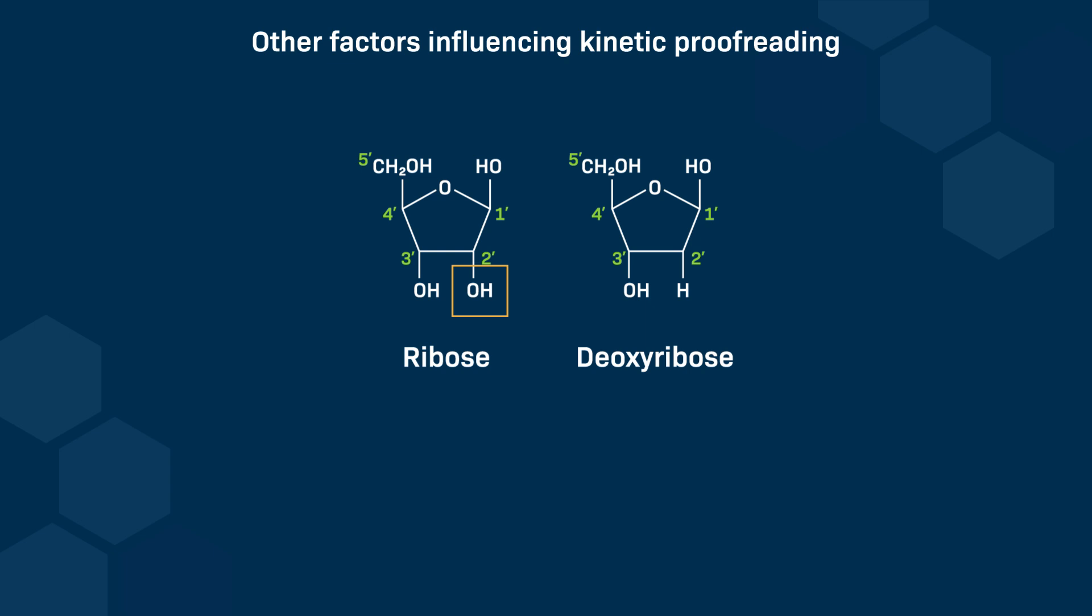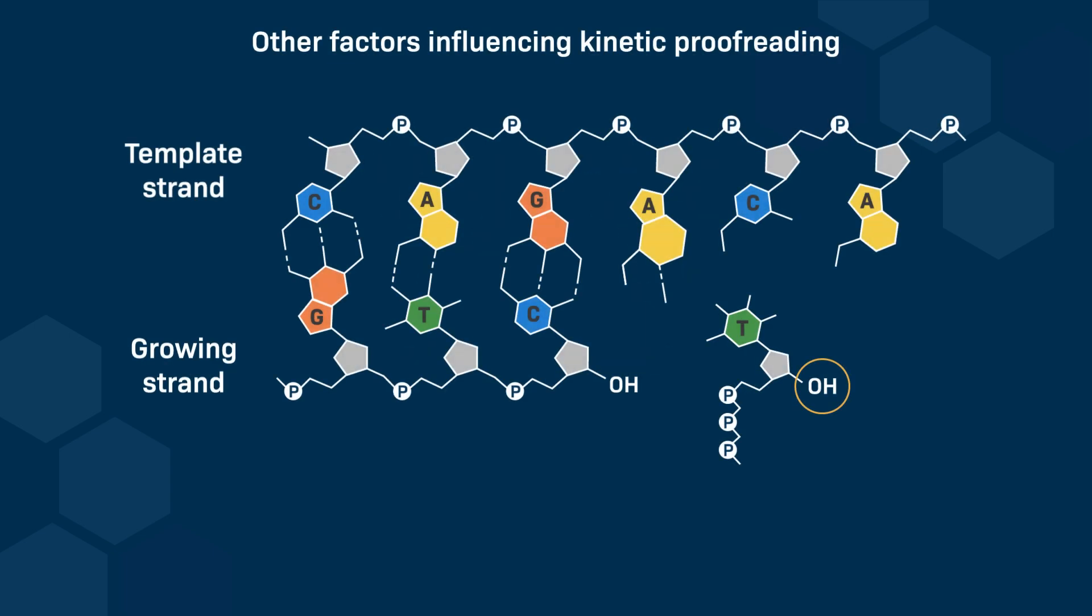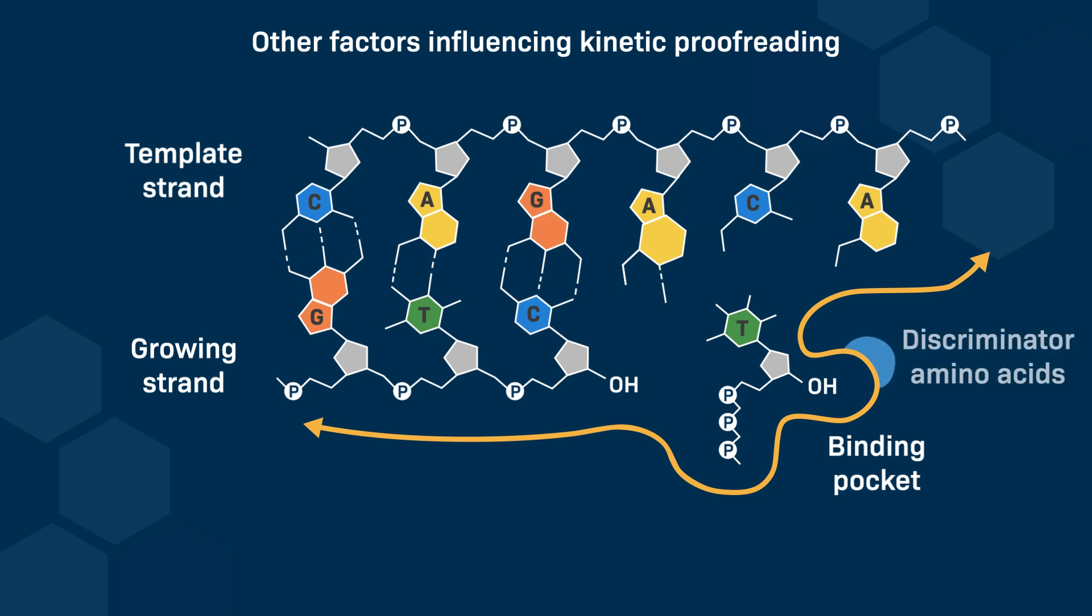In deoxyribose, hydrogen replaces the hydroxyl group bound to the 2' carbon of ribose. When an incoming deoxyribonucleotide binds to the catalytic site of DNA polymerase, the hydroxyl group on its 3' carbon fits neatly into a binding pocket. This correct positioning is aided by discriminator amino acids that form van der Waals contacts with the deoxyribose. However, ribonucleotides are partially excluded from the DNA polymerase catalytic site due to the presence of an OH group on C2' of the ribose. This hydroxyl group prevents the insertion of the OH on C3' into the binding pocket, causing the ribose to shift away from the discriminator amino acids. As a result, ribonucleotides are not properly positioned in the active site, making the formation of a phosphodiester bond and the misincorporation of a ribonucleotide highly unlikely.